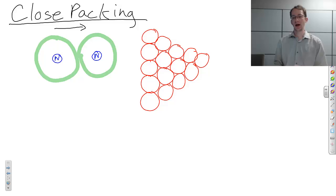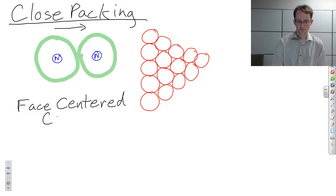This close-packing leads to two types of crystal structure, two types of unit cell. One of them is called face-centered cubic, and you can guess what shape that is—it's going to be a cube.